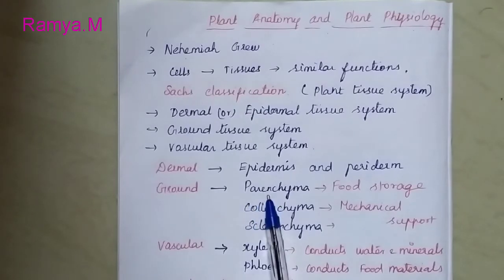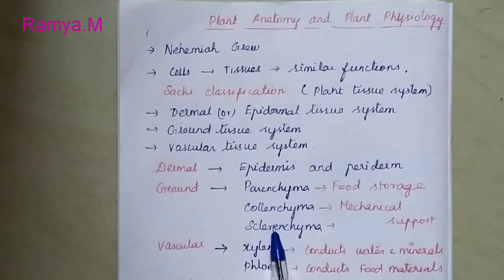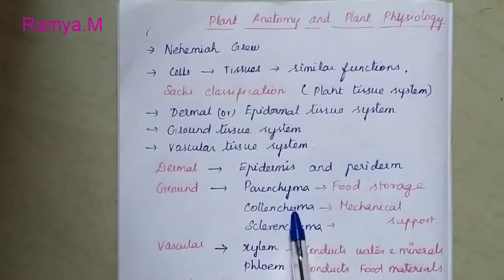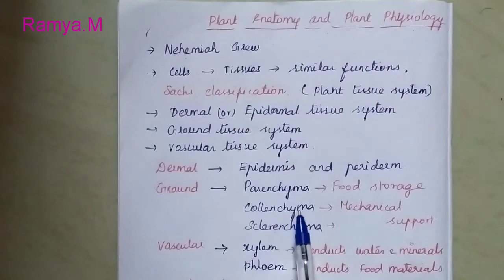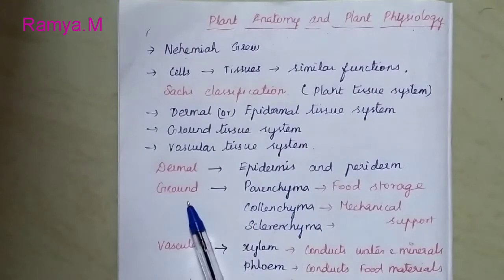The ground tissue system consists of three main components: one is parenchyma, second one is collenchyma, and third one is sclerenchyma. These are the three kinds of cells which are present in the ground tissue.